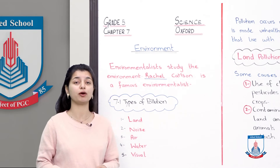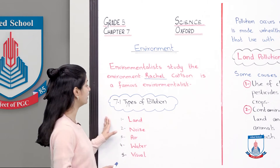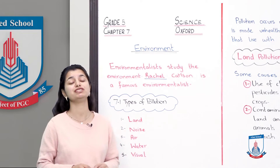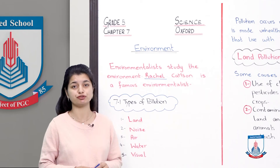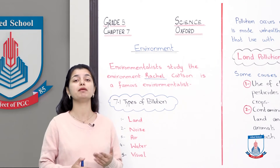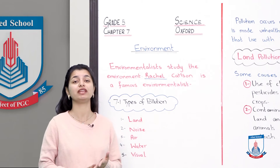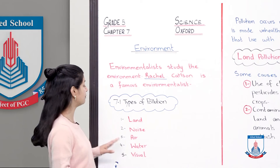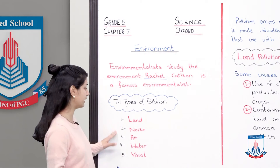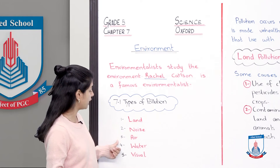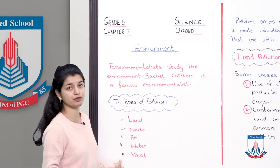Keeping that in view, we start our sub-topic 7.1: types of pollution. We have five different types of pollution. Pollution happens in the environment, causing negativity. These five types are: land pollution, noise pollution, air pollution, water pollution, and visual pollution.